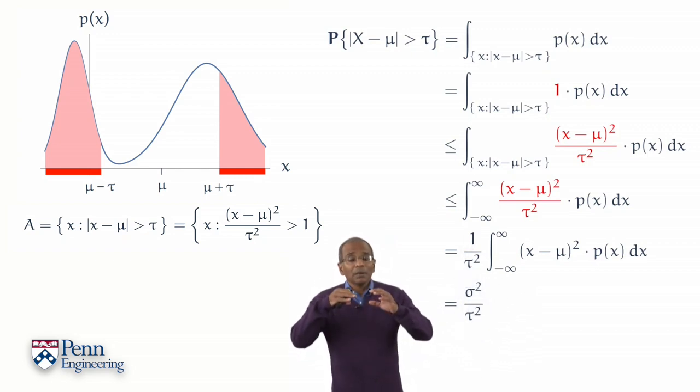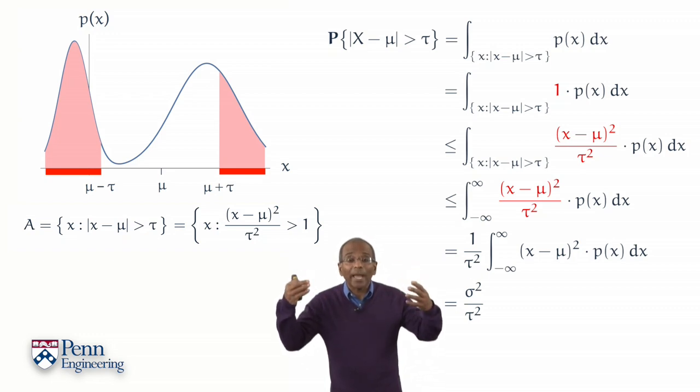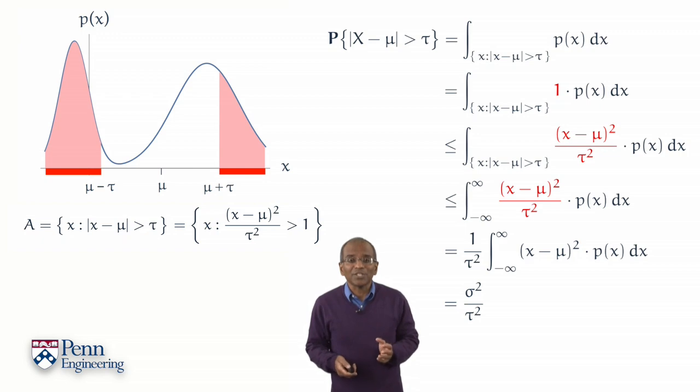And therefore, the probability that x deviates from mu by more than tau is bounded by an expression involving the variance or the expected squared spread divided by the deviation squared.